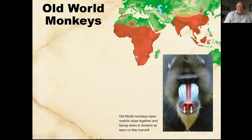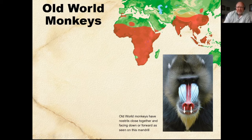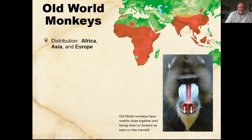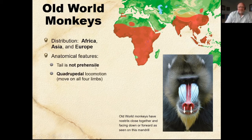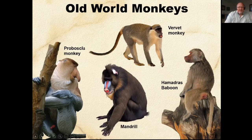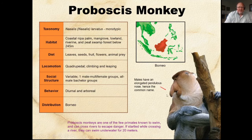Then you get the old world monkeys, which are more from the old world — primarily Africa, where most of the development happened — and you can see how they spread into Asia. It's believed they spread into Asia because when India broke away from Africa, it took many of these old world monkeys with it and then crashed into Asia. Their tail is not prehensile, they are quadrupedal, nostrils are close together, and examples include the proboscis monkey, the vervet monkey, hamadryad baboons, and mandrills. The proboscis monkey has a large ugly nose and is found only on the island of Borneo.